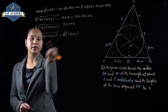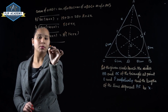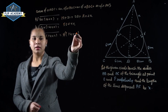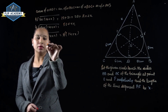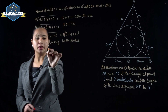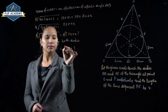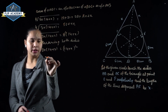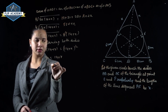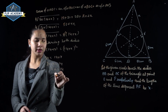Squaring both sides: 3X(X+14) equals (X+14)². Expanding: 3X equals X+14 after cancelling (X+14) from both sides. So 3X minus X equals 14, giving 2X equals 14, therefore X equals 7 cm.